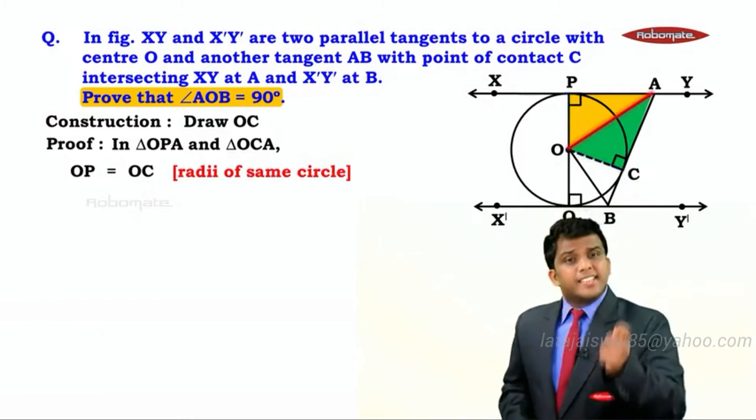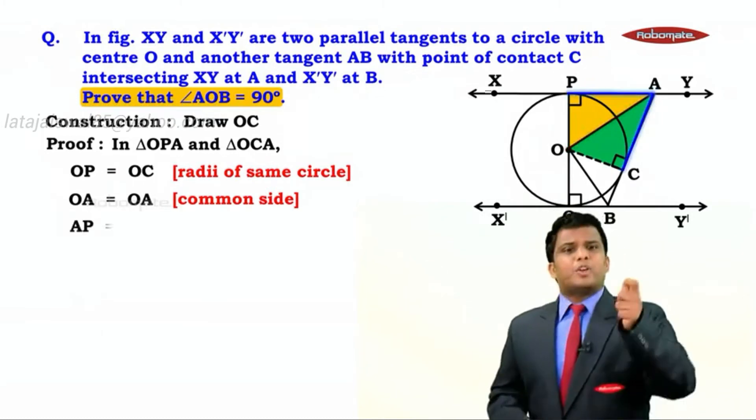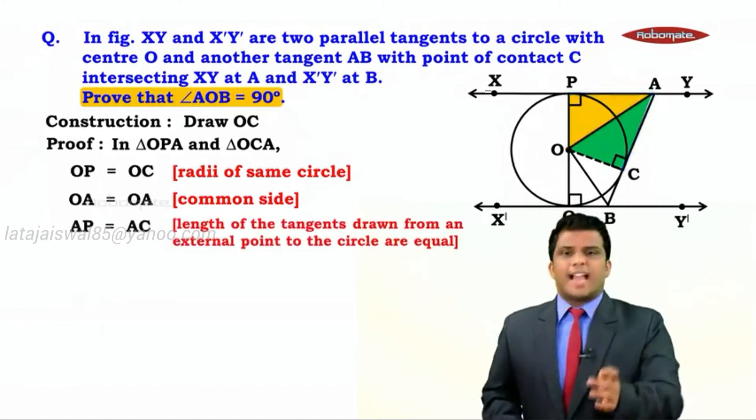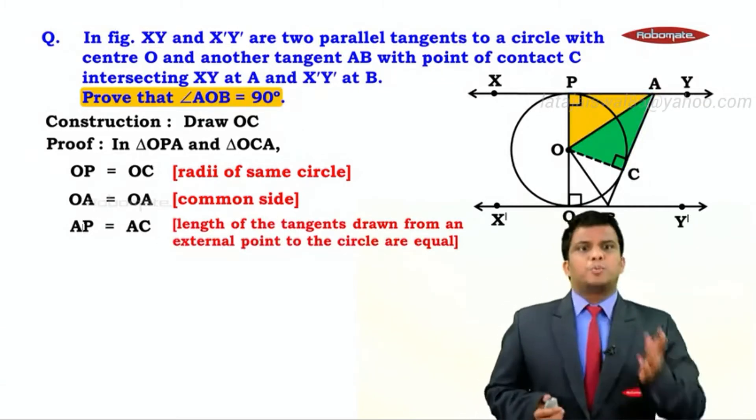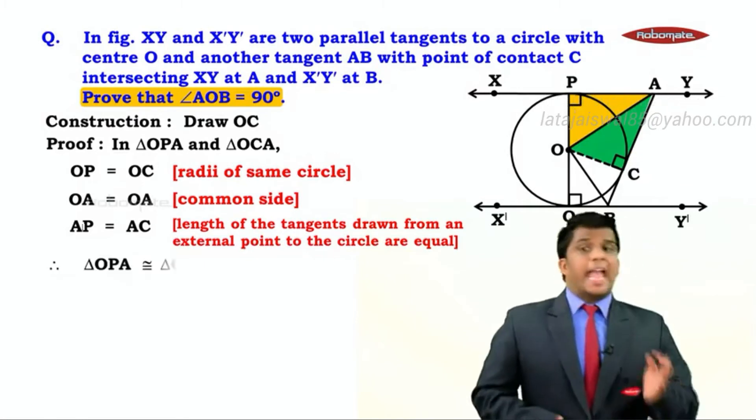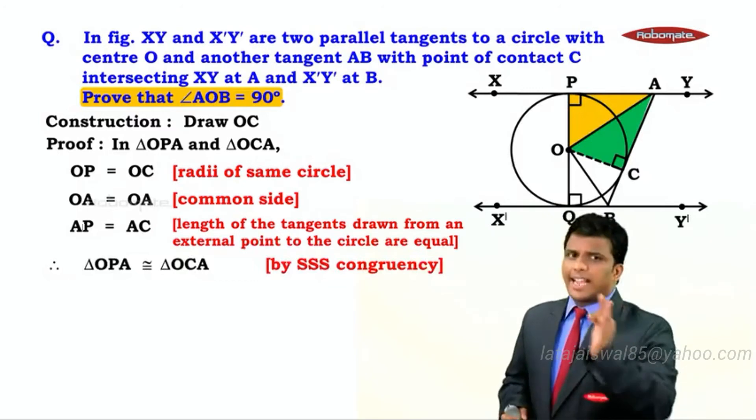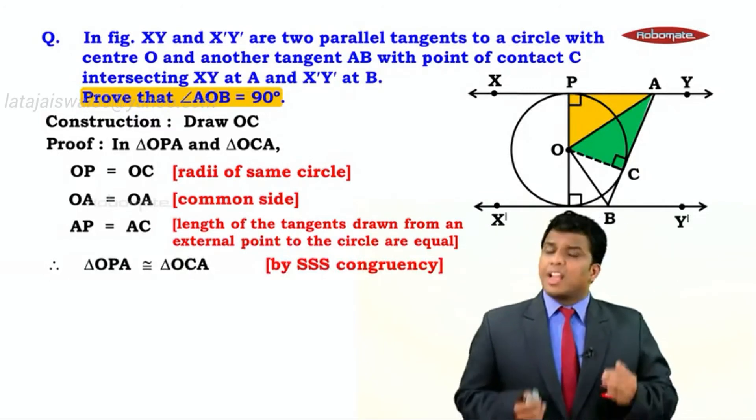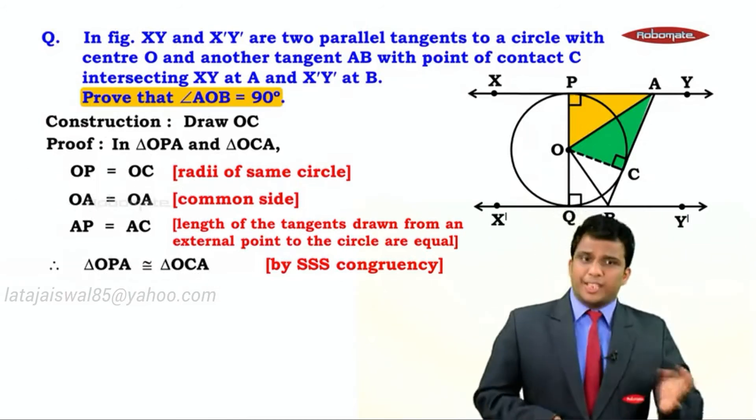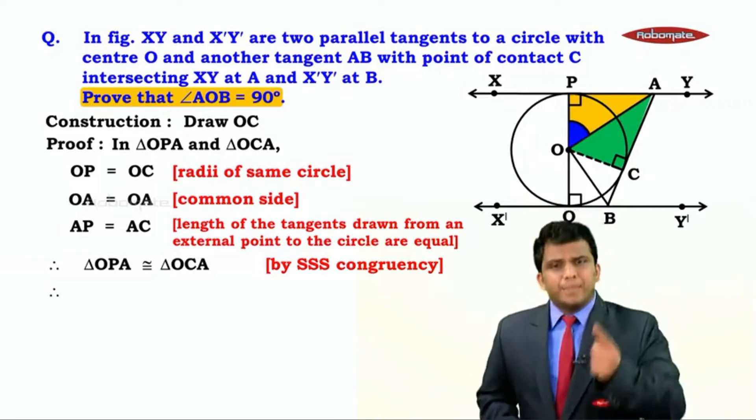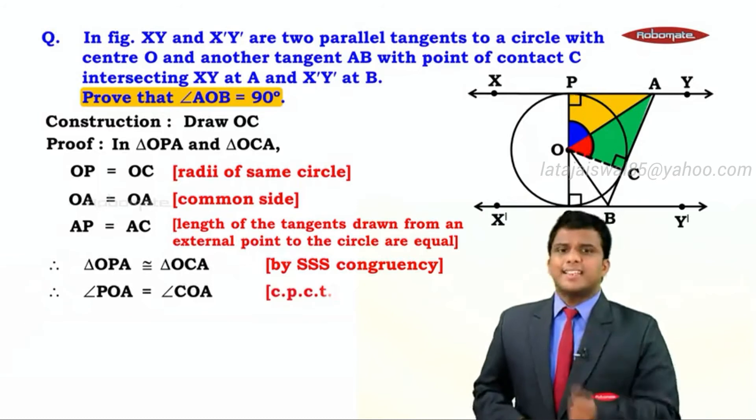Further, OA equals OA. It's a common side. And we can also see that AP equals AC as we know tangents from an external point to a circle are equal in length. These conditions are sufficient to prove the triangles are congruent by SSS congruency. So we conclude triangle OPA is congruent to triangle OCA. When two triangles are congruent, their corresponding parts are also equal. Hence we say angle POA equals angle COA. The reason is CPCT.